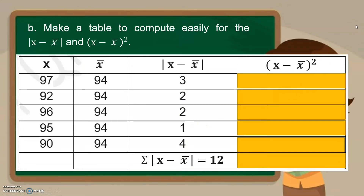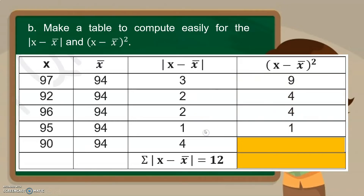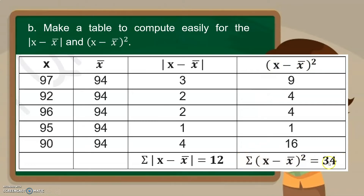For the squared column — squaring each deviation — 3 squared is 9, 2 squared is 4, 2 squared is 4, 1 squared is 1, and 4 squared is 16. The summation of x minus mean squared is 9 plus 4 plus 4 plus 1 plus 16, which equals 34. This table is important because we will use these summations in the next steps.